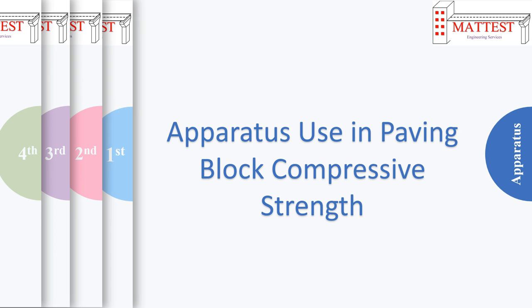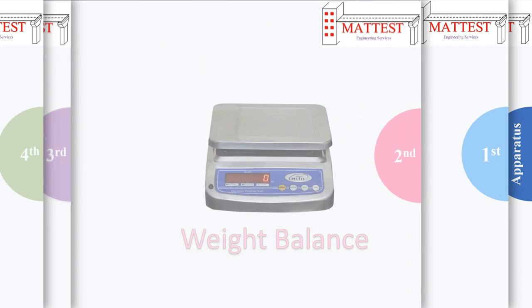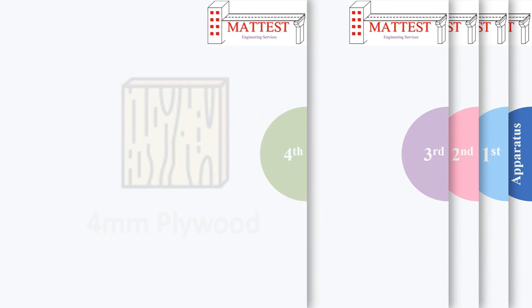For performing this test, we require some apparatus: first, a two pan balance; second, a weight balance; third, a compression testing machine; and fourth, a 4mm thick plywood sheet. Now we proceed step by step.